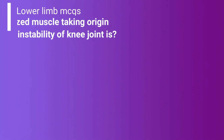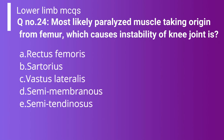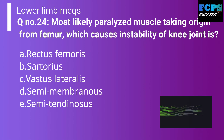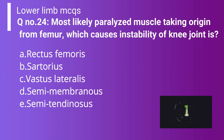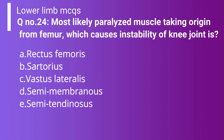Question 24: The most likely paralyzed muscle taking origin from the femur which causes instability of the knee joint is: Option A: Rectus femoris. Option B: Sartorius. Option C: Vastus lateralis. Option D: Semimembranosus. Option E: Semitendinosus. The correct answer is Option C — vastus lateralis. Its origin is from the intertrochanteric line and linea aspera of the femur. Its insertion is the tibial tuberosity, and its function is to extend the tibia.